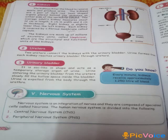The kidneys are a pair of dark red bean-shaped organs placed behind the abdomen on either side of the vertebral column. The average adult's kidneys measure about 12 cm in length, 6 cm in width and 3 cm in thickness.